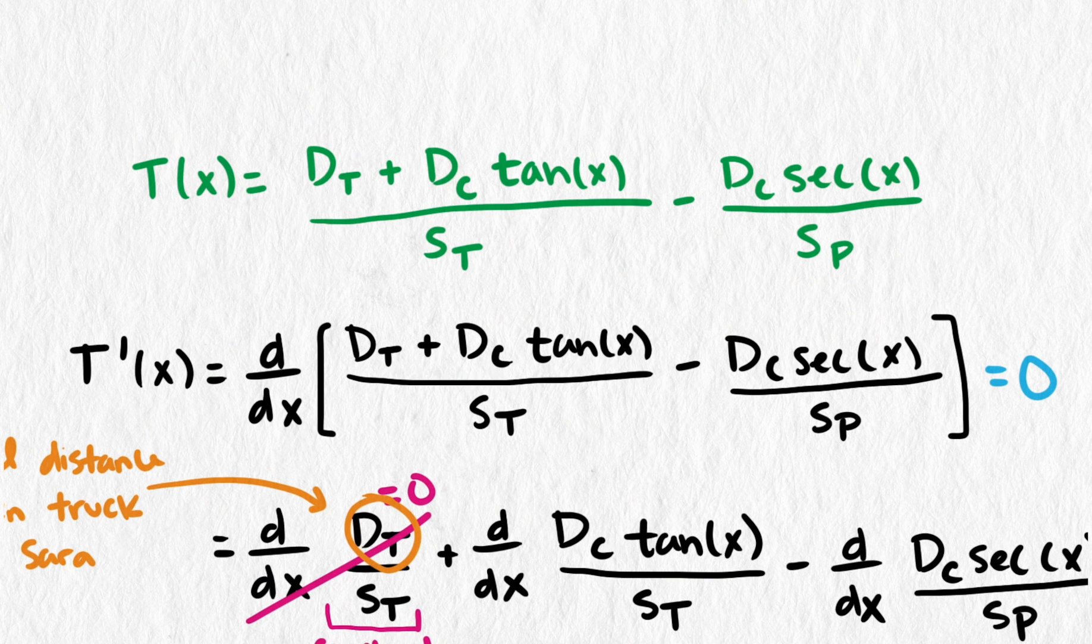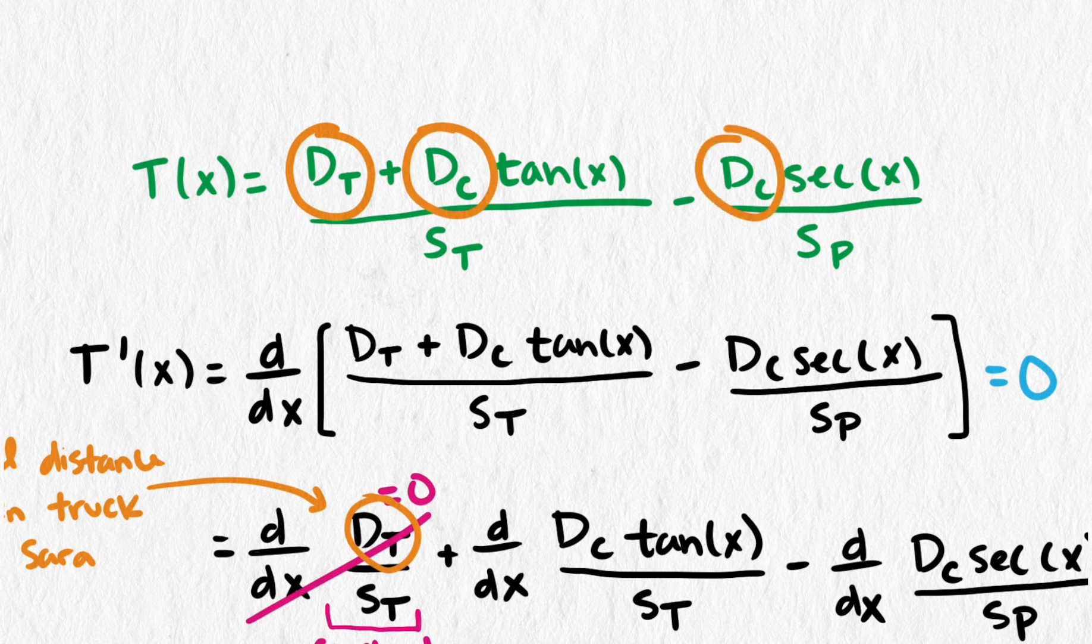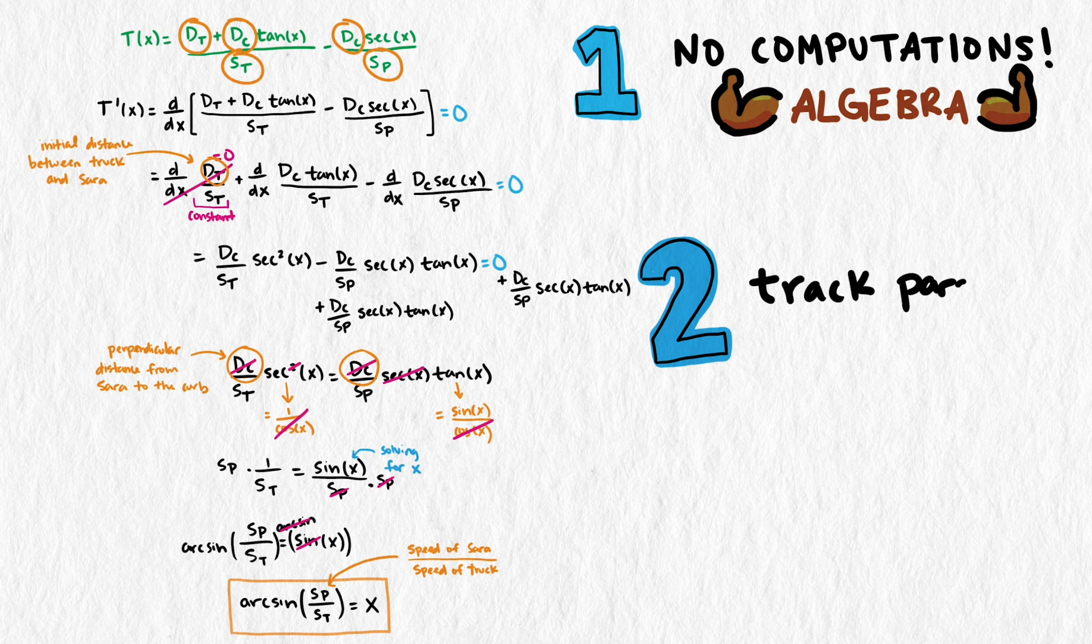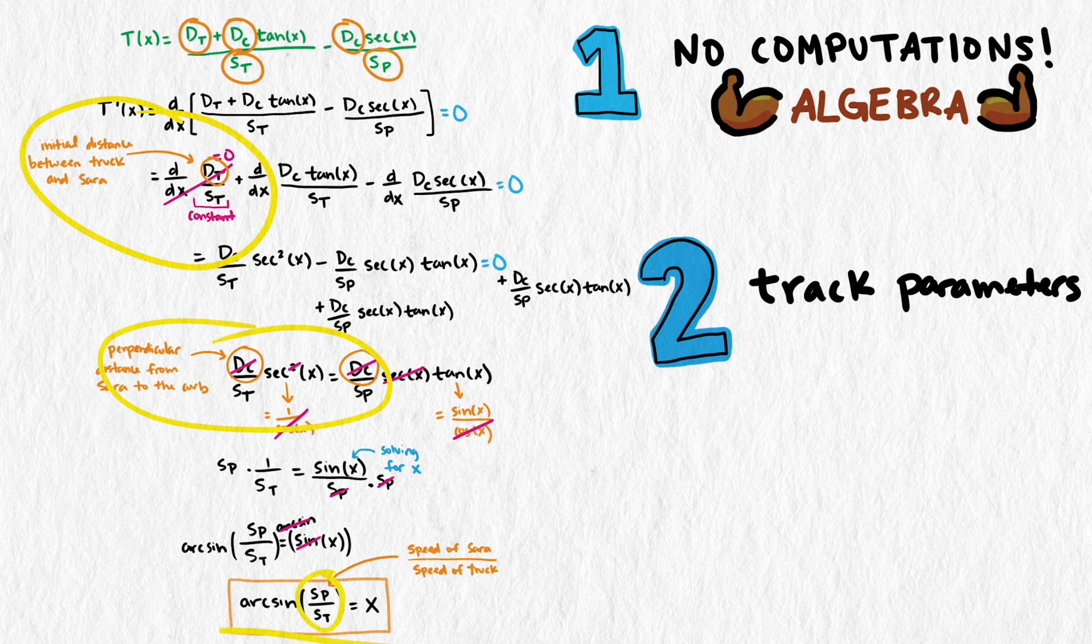I want to stop here for a moment and point out a few advantages that using a general model with parameters has over using one with specific values. First, there's no computation. Instead, we use the power of algebra in our analysis. Second, we can see how each parameter affects the solution. As some of the parameters disappeared through the process, we knew they didn't affect the optimal angle. The ones that are still in make it easier for us to understand the solution.